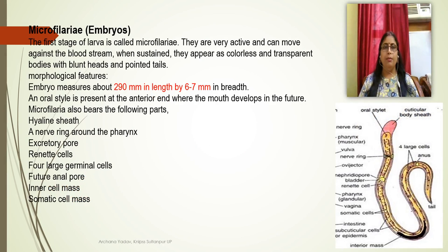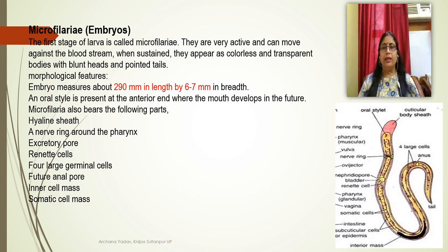Now we discuss the microfilaria. It is the embryo of Wuchereria bancrofti and is the first stage larva. It is very active and is present in the bloodstream. It has no color; the whole body is transparent. The anterior end is blunt and the posterior end is tapered or pointed.